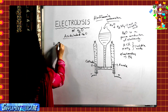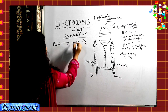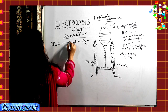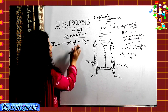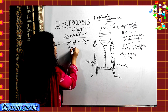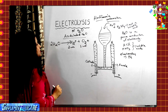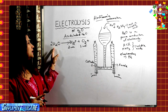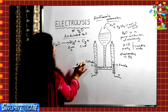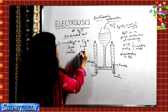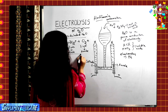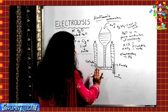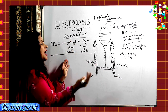When electric current is passed, the electrolyte gets decomposed. Water decomposes to form H₂ plus O₂. When water undergoes electrolysis, we get two volumes of hydrogen and one volume of oxygen. Hydrogen gas is evolved at the cathode and oxygen gas is evolved at the anode.